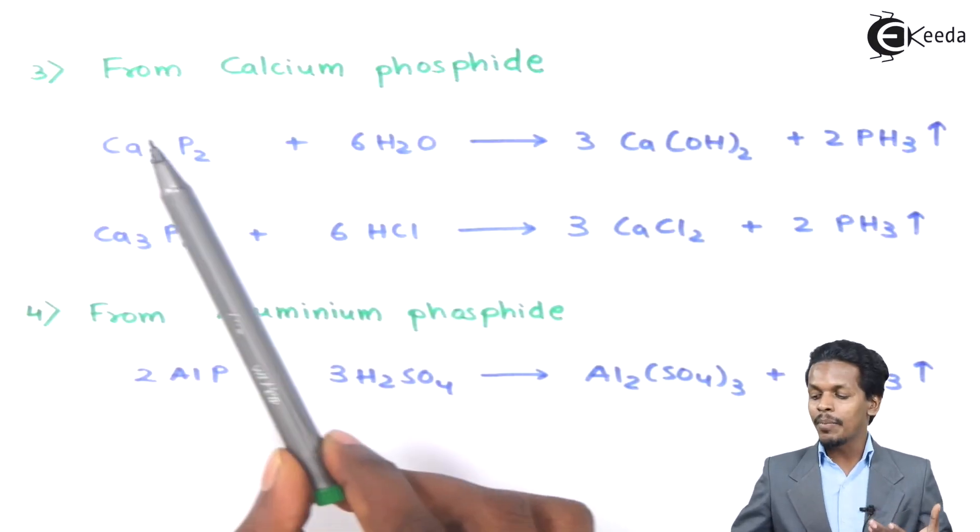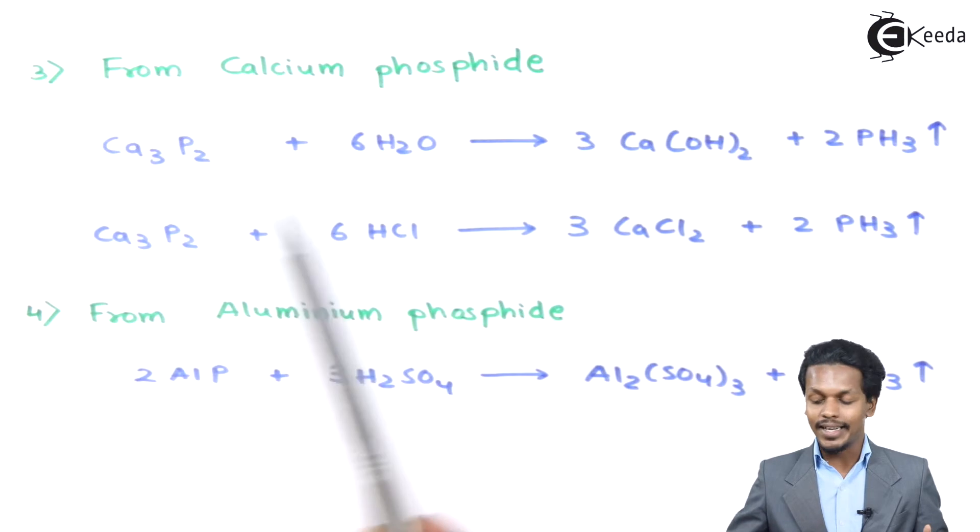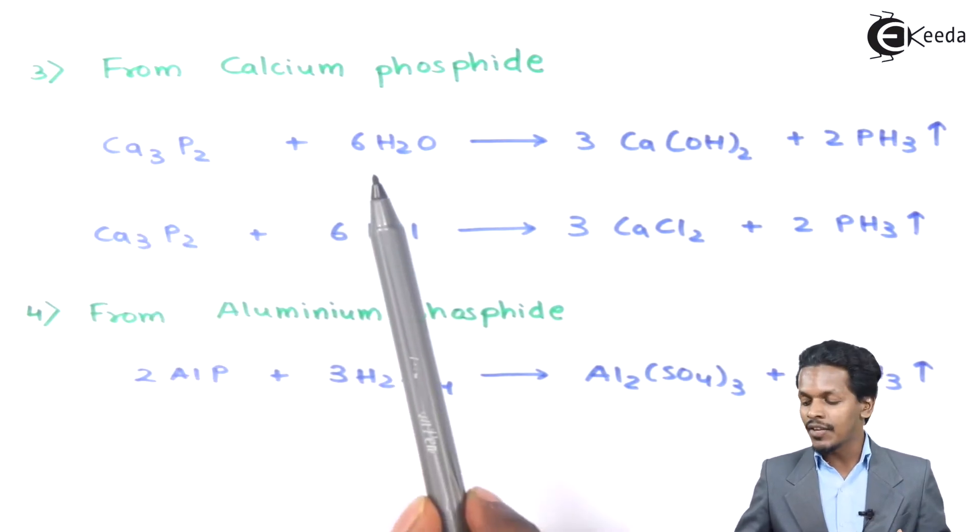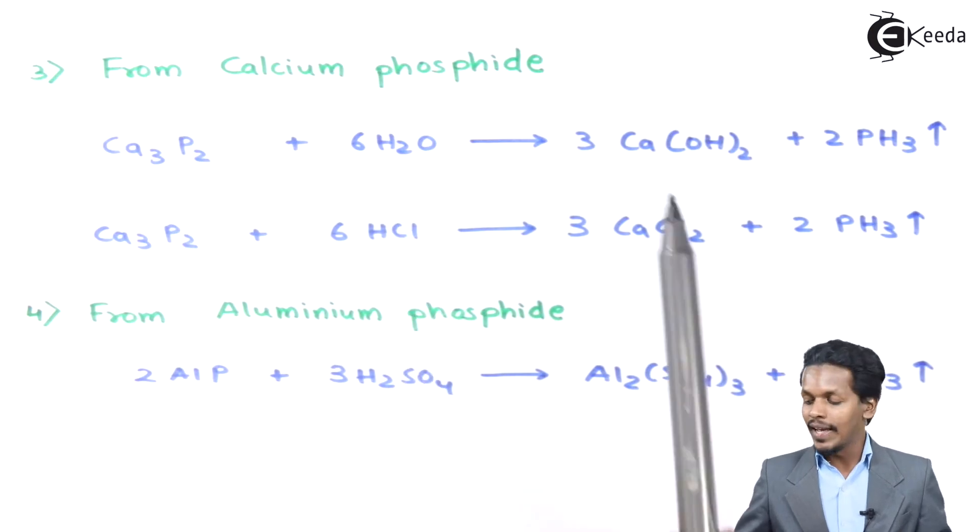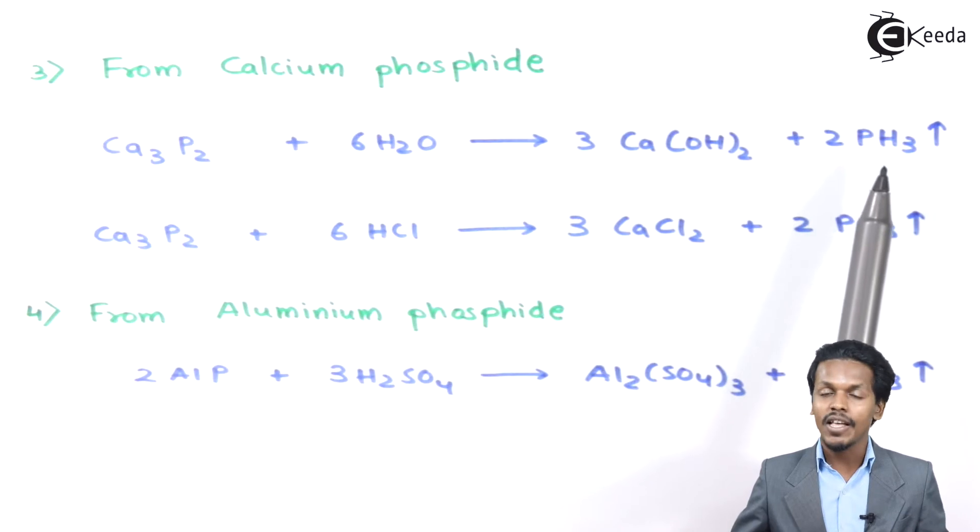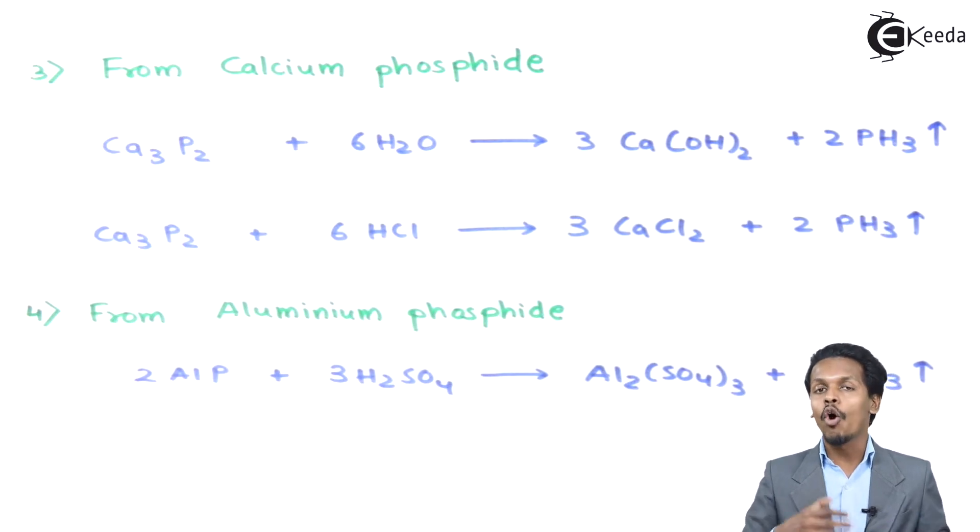The next reaction is we can prepare phosphine from calcium phosphide. In this case, Ca3P2 is known as calcium phosphide. Whenever it is reacted with water, 6 moles of H2O, we get 3 moles of calcium hydroxide along with 2 moles of PH3, which is phosphine. This is the method where we can obtain phosphine.